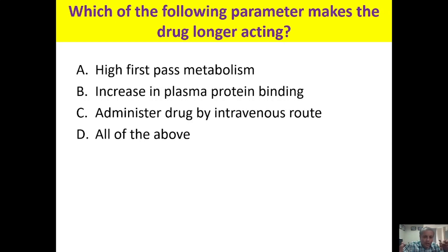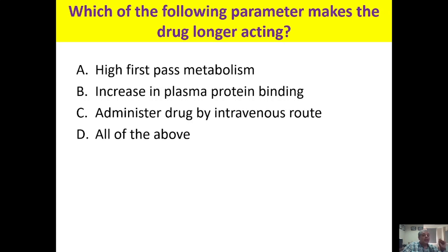Plasma protein binding acts as a temporary reservoir of the drug because the drug bound to plasma protein is not available for metabolism and excretion. That's why the answer is B — increase in plasma protein binding.